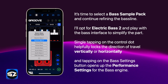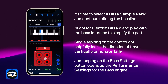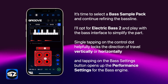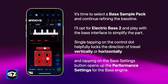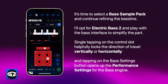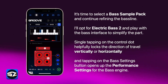It's time to select a bass sample pack and continue refining the bass line. I'll go for electric bass 2 and play with the bass interface to simplify the part. Single tapping on the control dot locks the direction of travel vertically or horizontally, and tapping on the bass settings button will open up the performance settings for the bass engine.